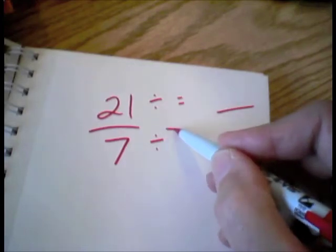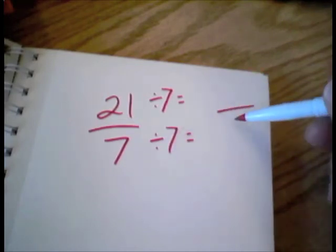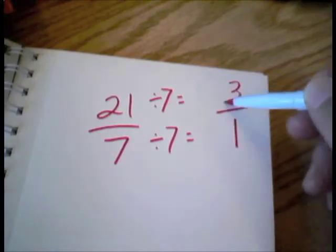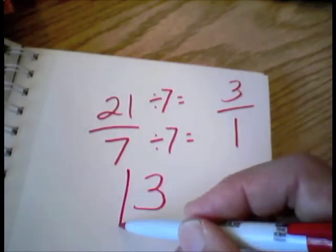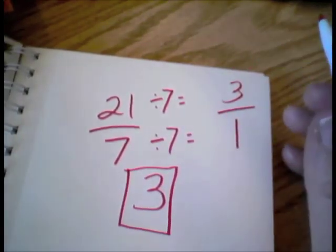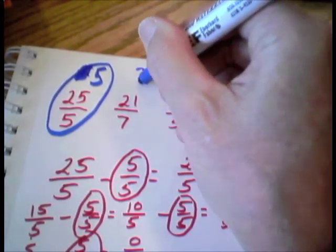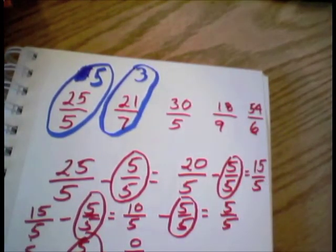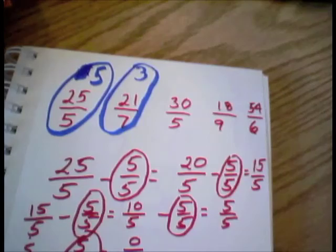You want to divide it by 7? 7 divided by 7 is 1, and 21 divided by 7 is 3. So we end up with 3 over 1, or in other words, 3. So 21 sevenths equals 3. Now we know we've got the value in whole numbers of 25 fifths and 21 sevenths. How about 30 fifths?